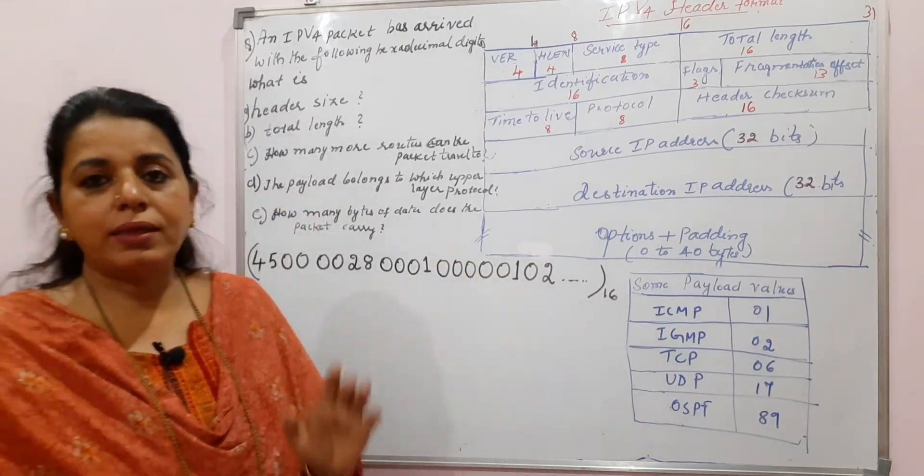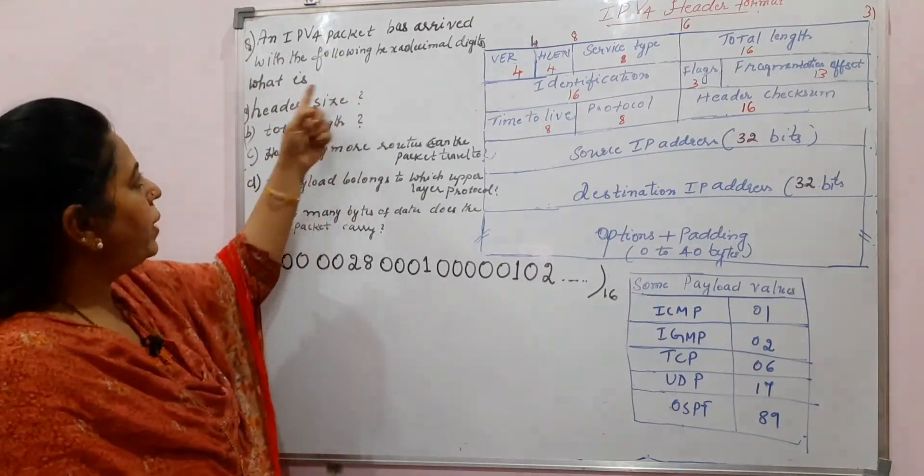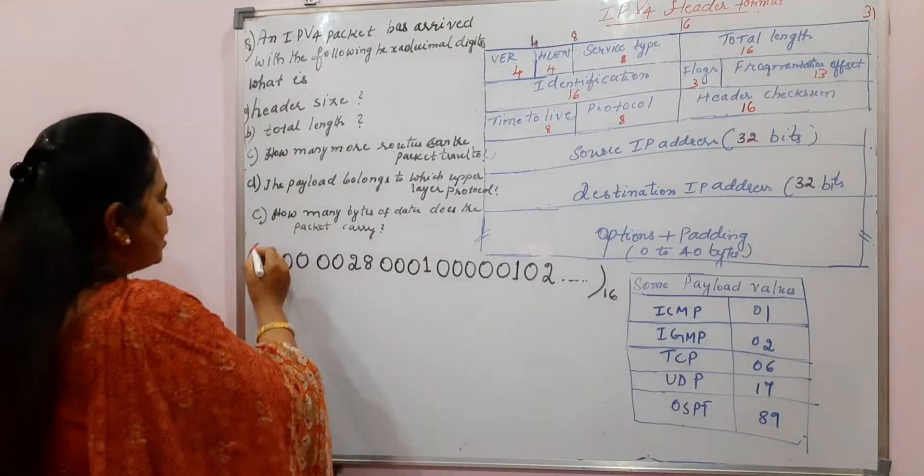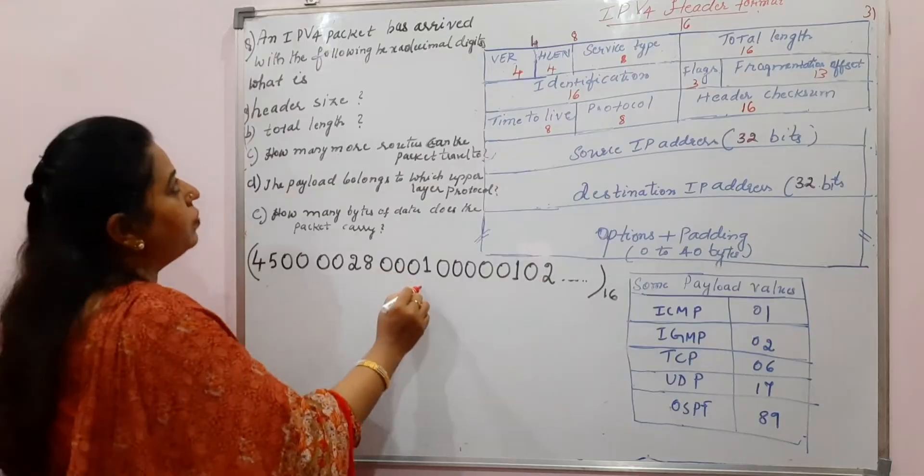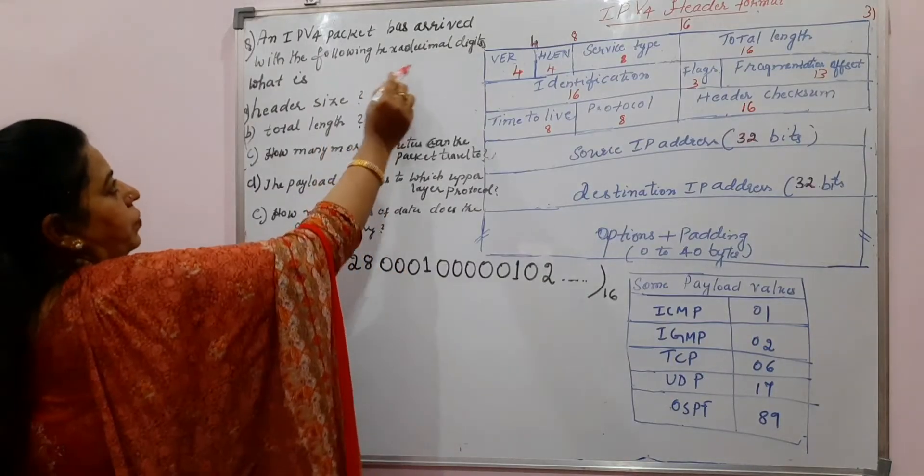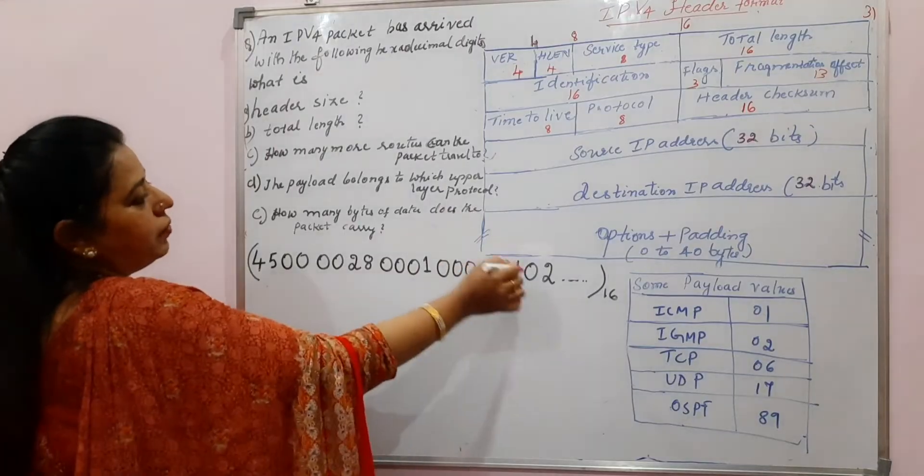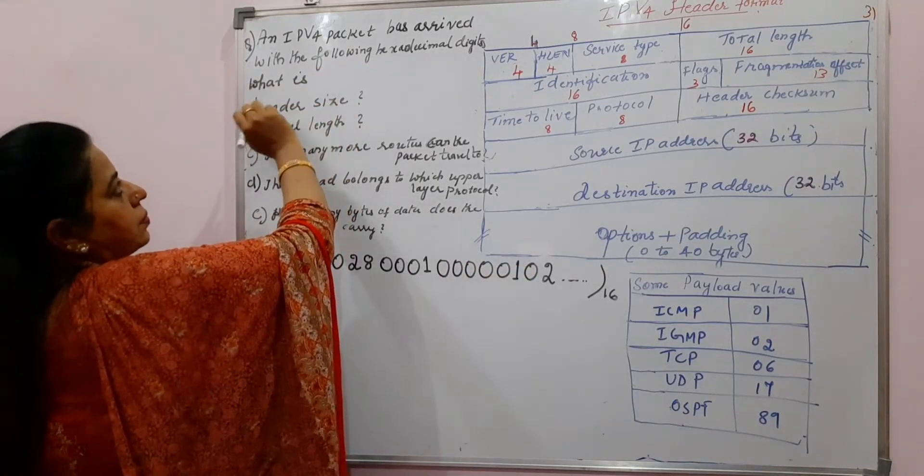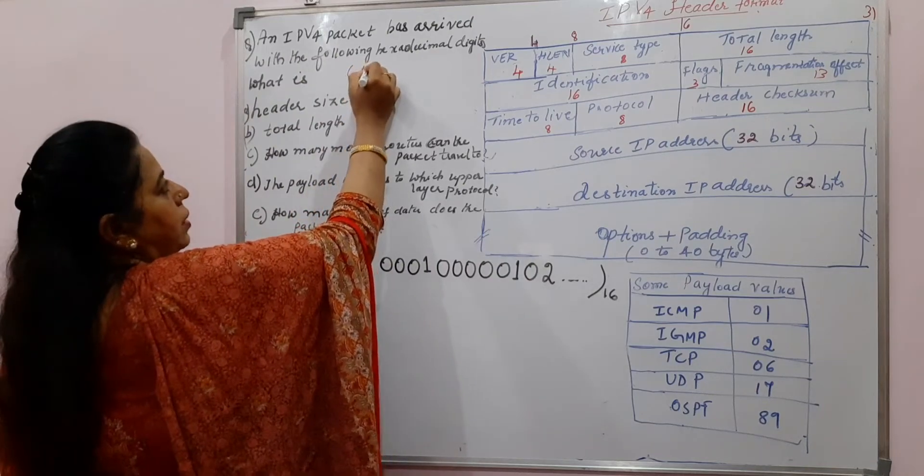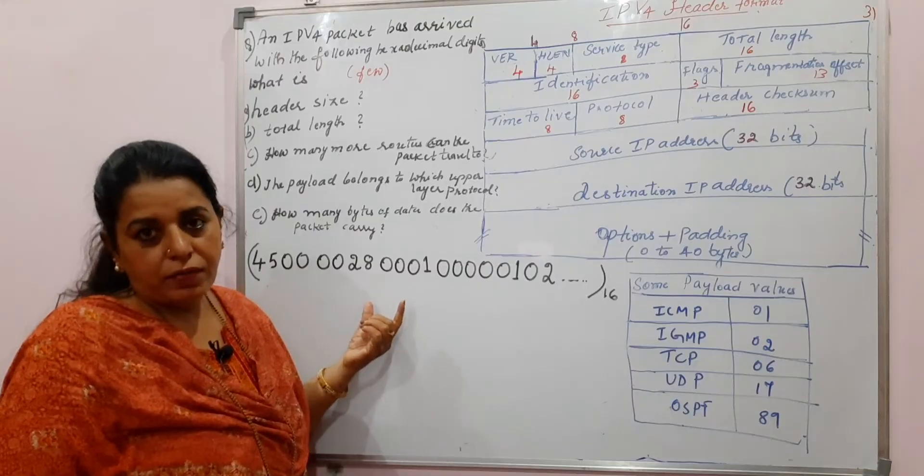So what exactly is the question? The question is an IPv4 packet has arrived with the following hexadecimal digits. So these are the hexadecimal digits that are there in the packet. An IPv4 packet has arrived with the following hexadecimal digits, but few are given here in the problem statement. I can just write here, not all hexadecimal digits, few hexadecimal digits are given in the problem statement.